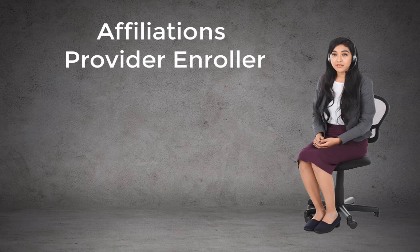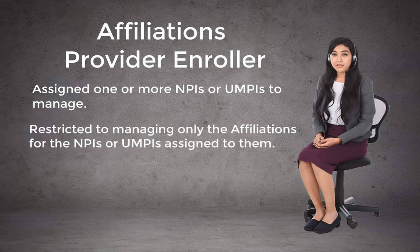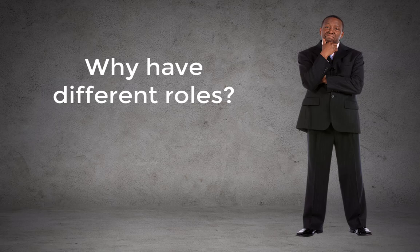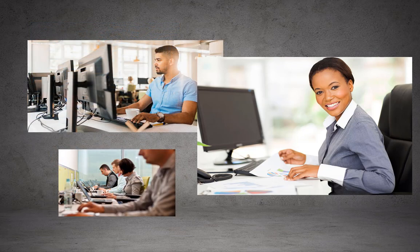The Affiliations Provider Enroller is the final user role in MPSE. This role is similar to an Enrollment Record Provider Enroller in that they are both assigned one or more NPIs or UMPIs to manage, but they are restricted to managing only the affiliations within the enrollment record. An Affiliations Provider Enroller can only make affiliation requests. If you have a large organization with multiple locations and numerous NPIs or UMPIs, assigning different people to manage requests for specific locations may make sense. These user roles also limit the types of changes a person can make to the MPSE account.